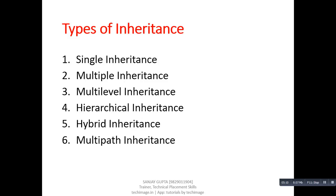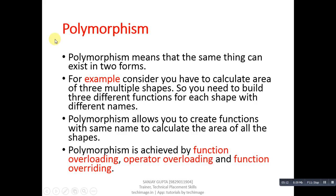Polymorphism is another feature of C++. Polymorphism means that the same thing can exist in many forms. For example, consider you have to calculate the area of multiple shapes — you would need to build different functions for each shape with different names. Polymorphism allows you to create functions with the same name to calculate the area of all the shapes.